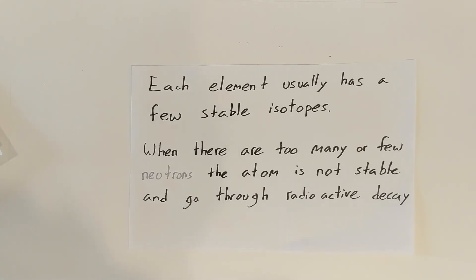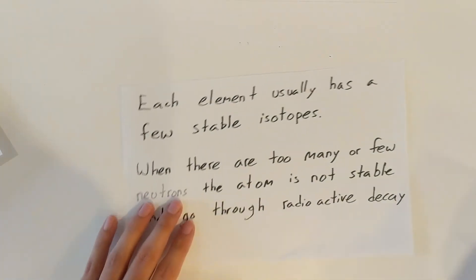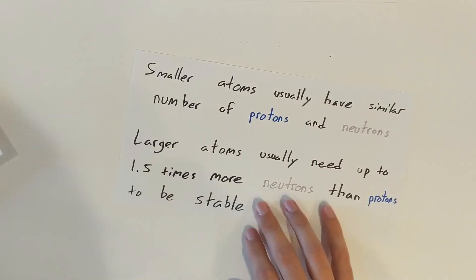We can't have too many neutrons because then it's just cluttering our nucleus. So there's a good center, a good happy amount of neutrons that we could possibly have. And it depends on the size of the atom.